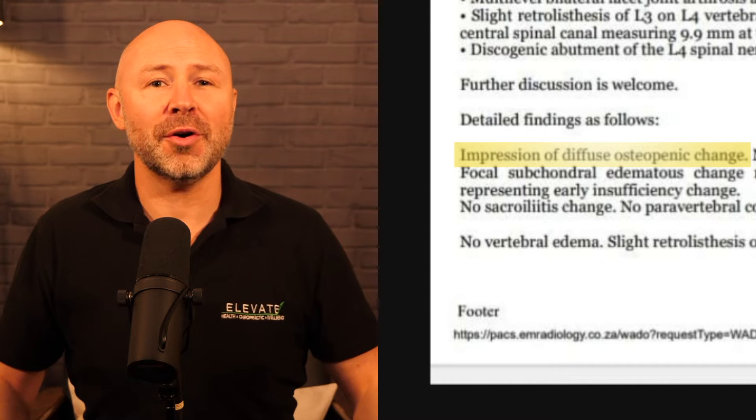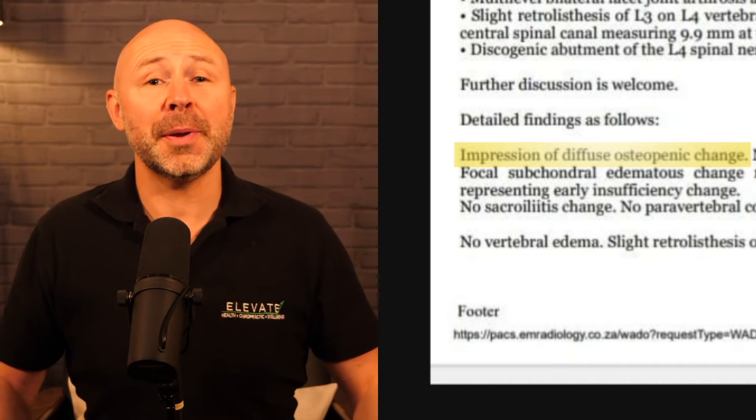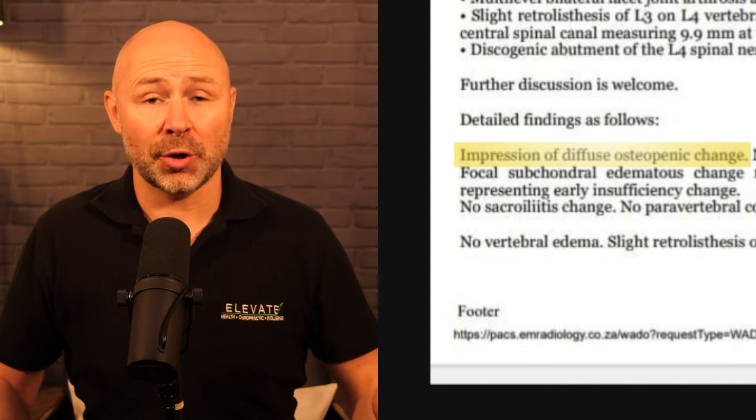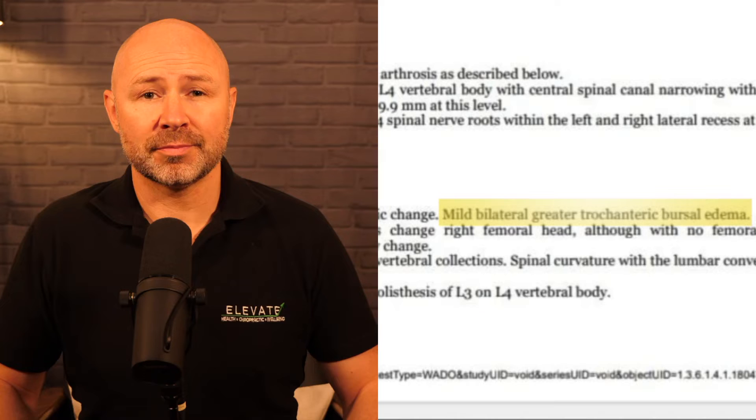The impression mentions diffuse osteopenic change. Osteopenia is where we lose mineral content from the bone — it's the mildest form, then we have osteoporosis, and then the more severe osteomalacia. Post-menopausal women do tend to lose bone density faster, and this increases the risk of developing osteoporosis later in life.